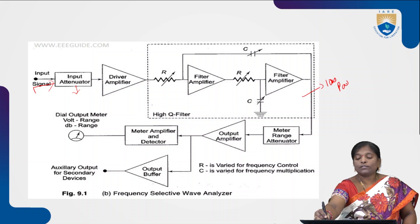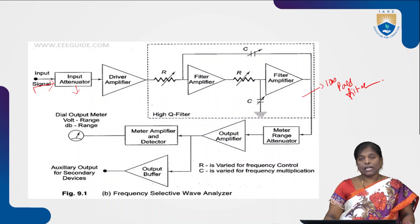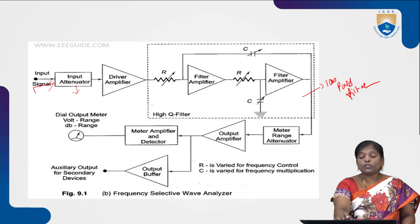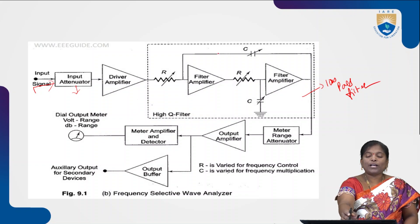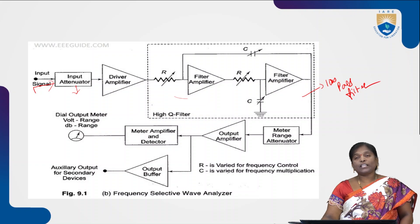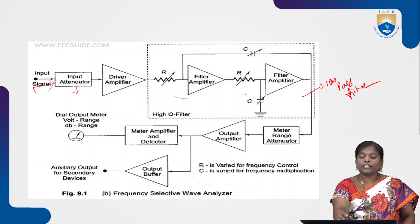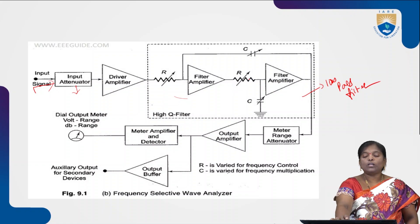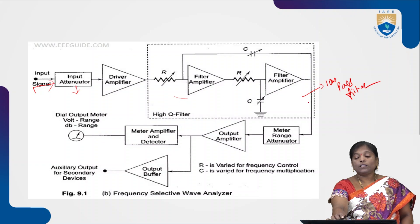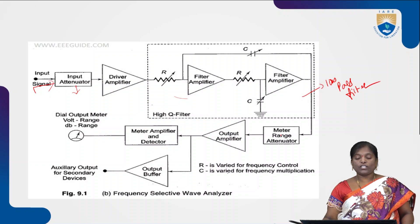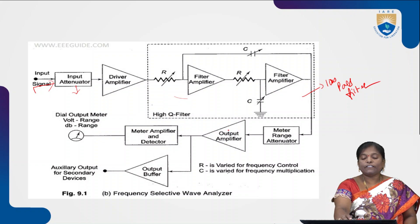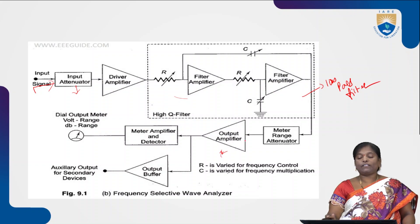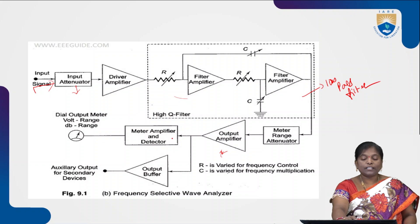We are using a low-pass filter in the high-Q filter stage, which allows only low frequency signals and rejects all high frequency signals. When the input signal passes through the first stage of the RC network, it filters the signal — only a particular band is allowed. After that, it is again tuned with the next RC network. By passing through the cascaded combination of two RC networks, only low frequency signals are allowed and all high frequency signals are rejected. That particular low frequency signal then passes through the meter range attenuator.